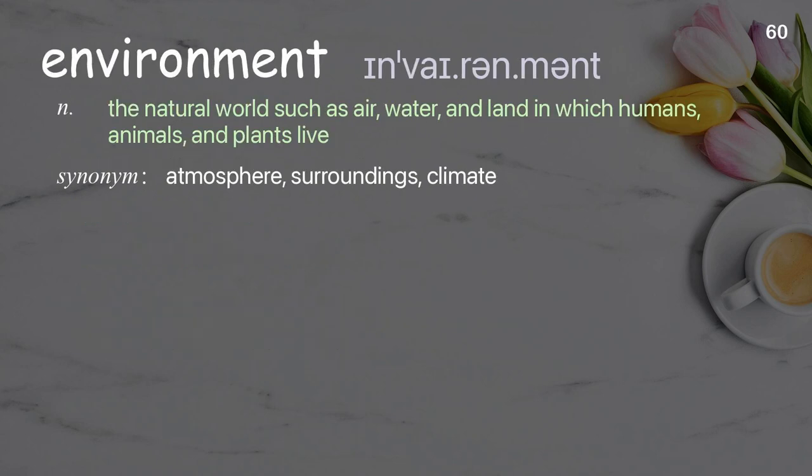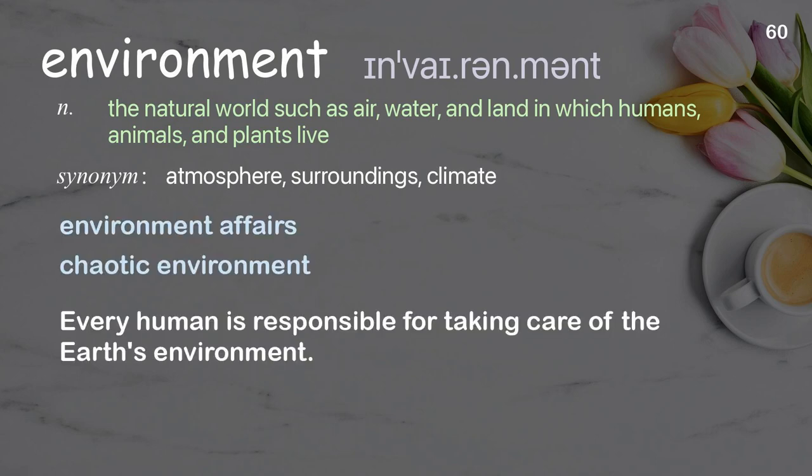Environment. The natural world such as air, water, and land in which humans, animals, and plants live. Examples: chaotic environment. Every human is responsible for taking care of the Earth's environment.